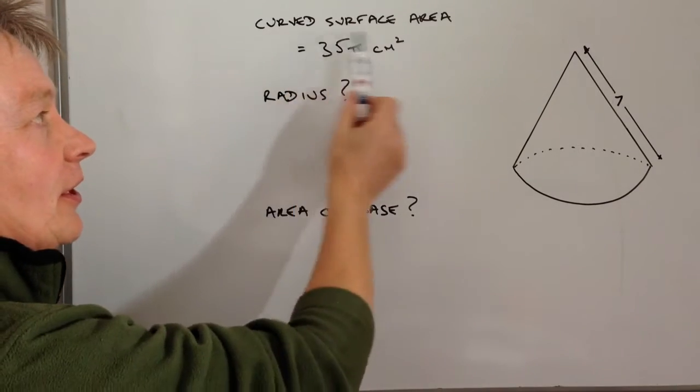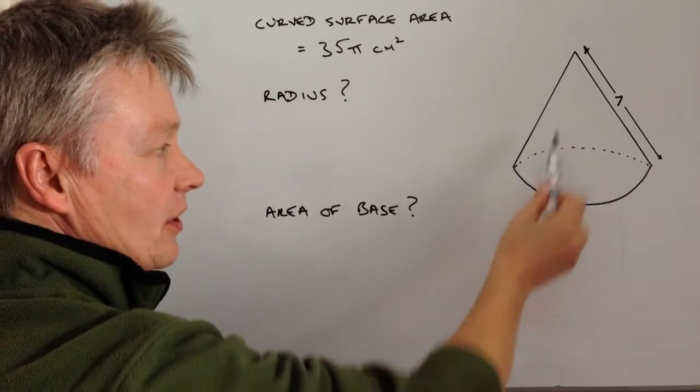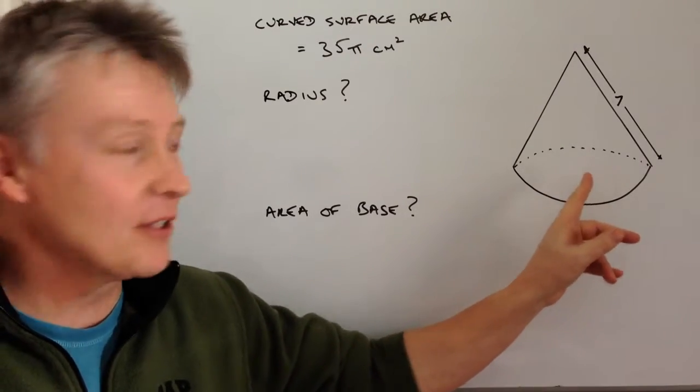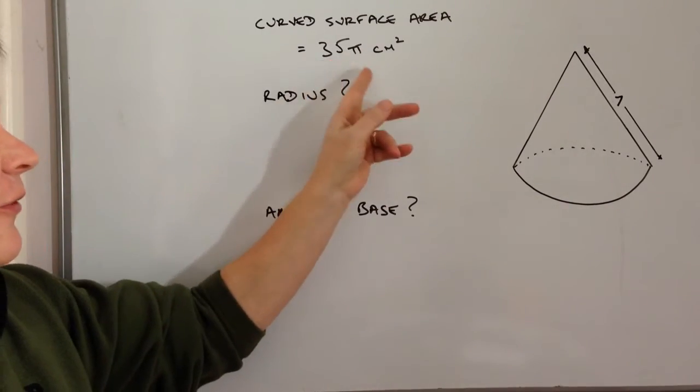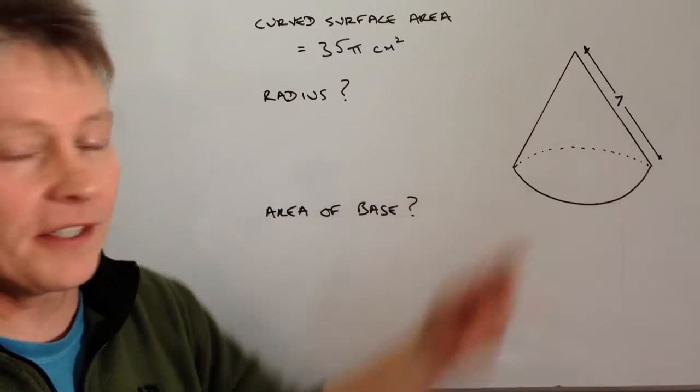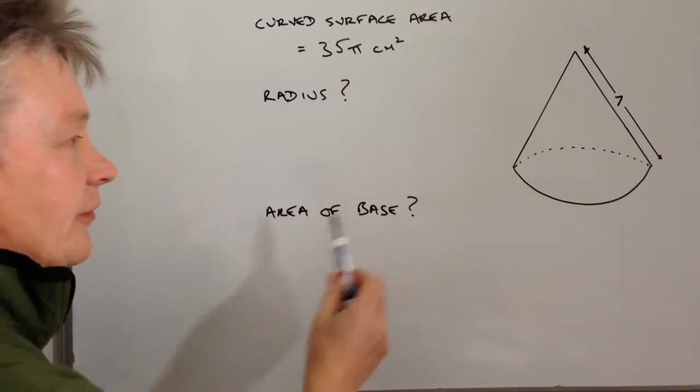The information I've been given is that the curved surface area, which is the surface area not including the circle at the bottom, is 35π centimeters squared and also the slant height is 7.